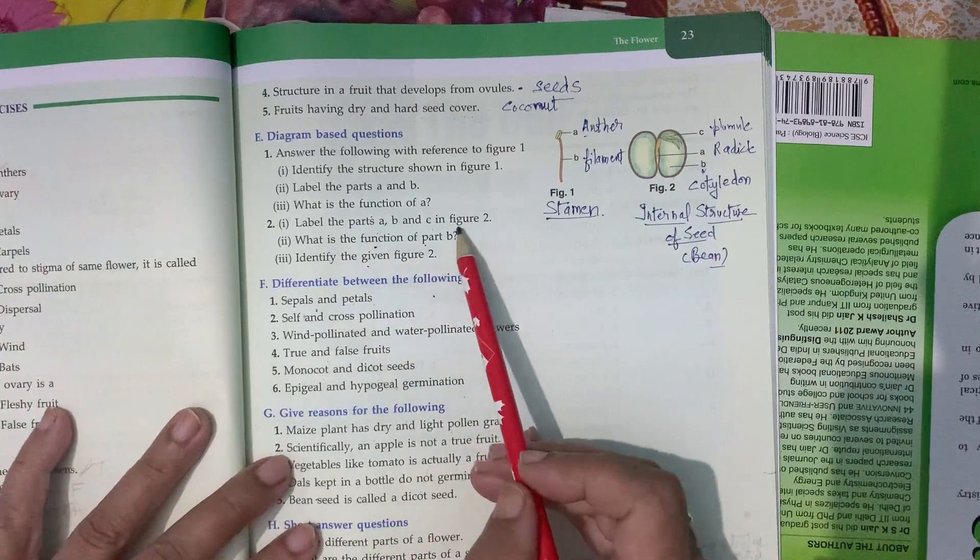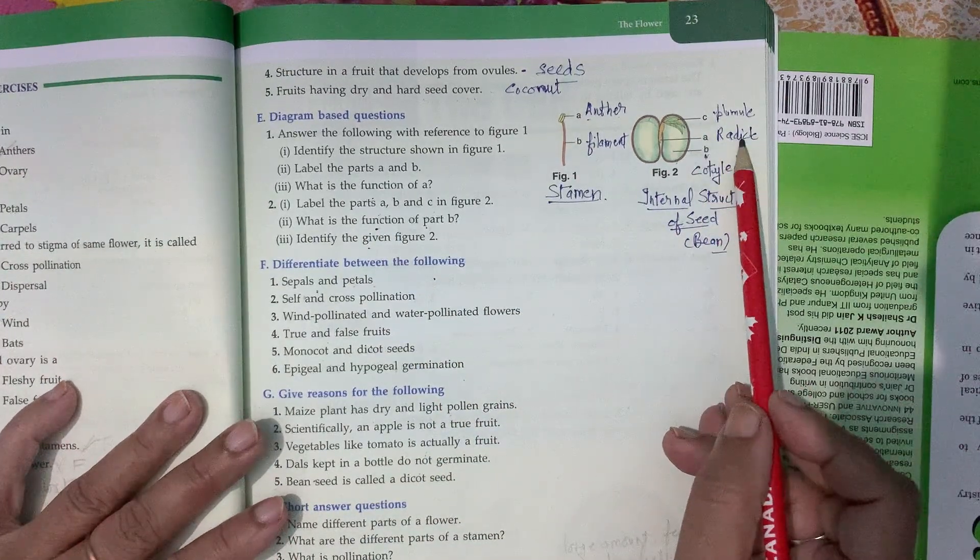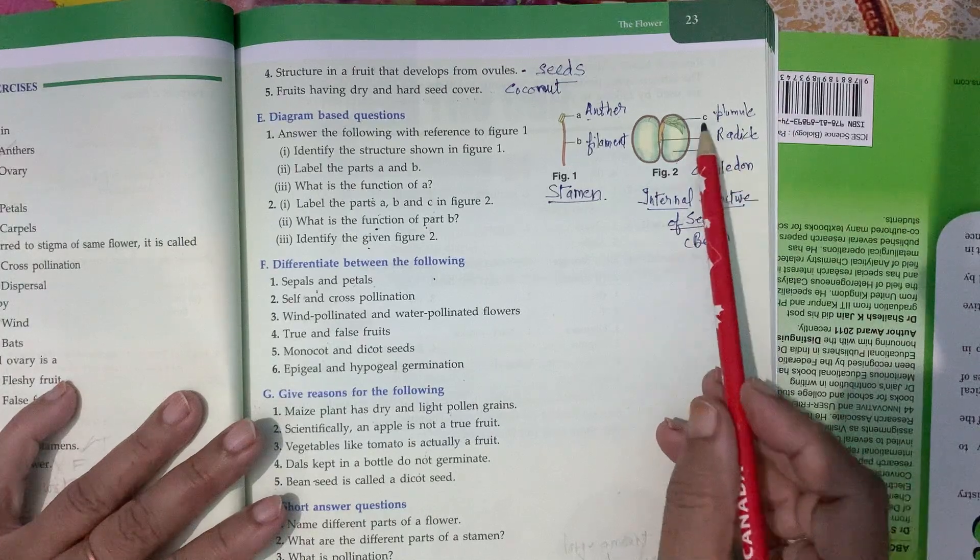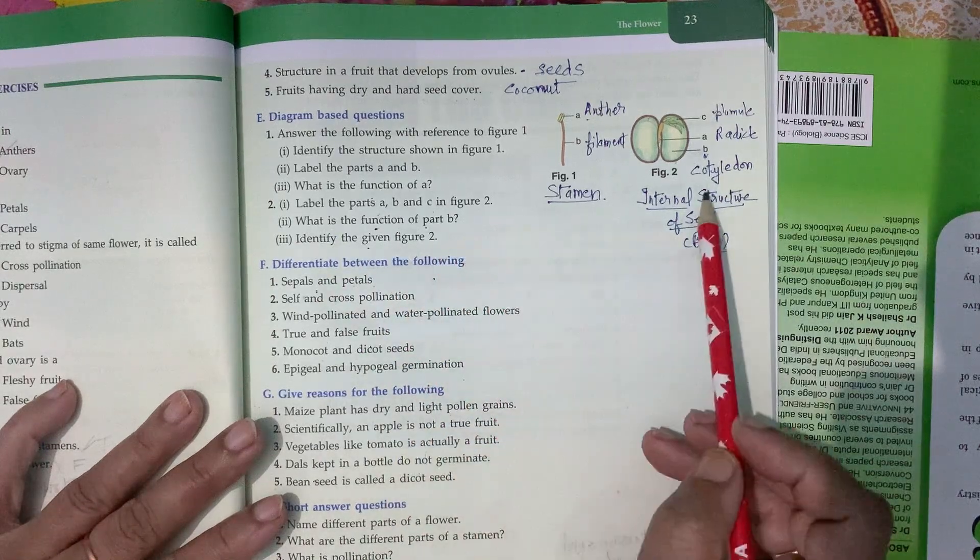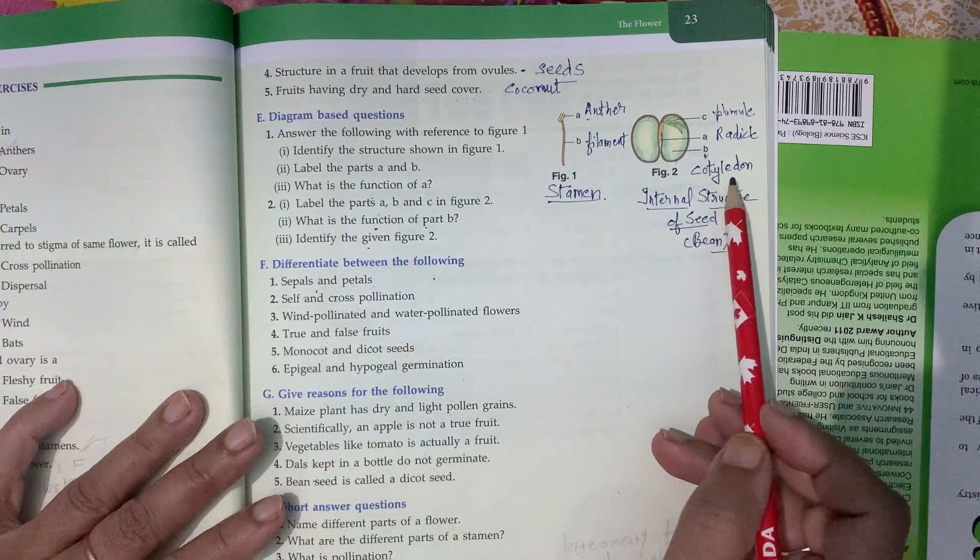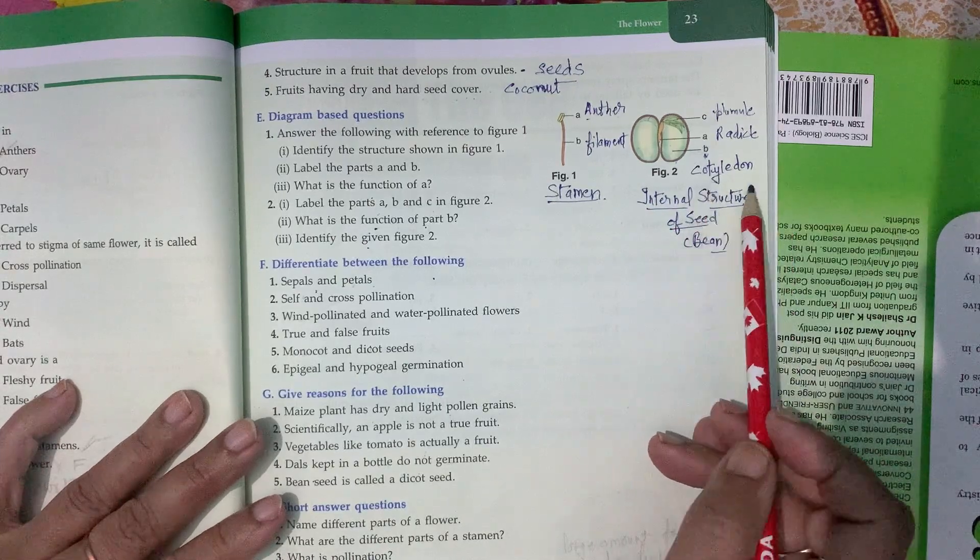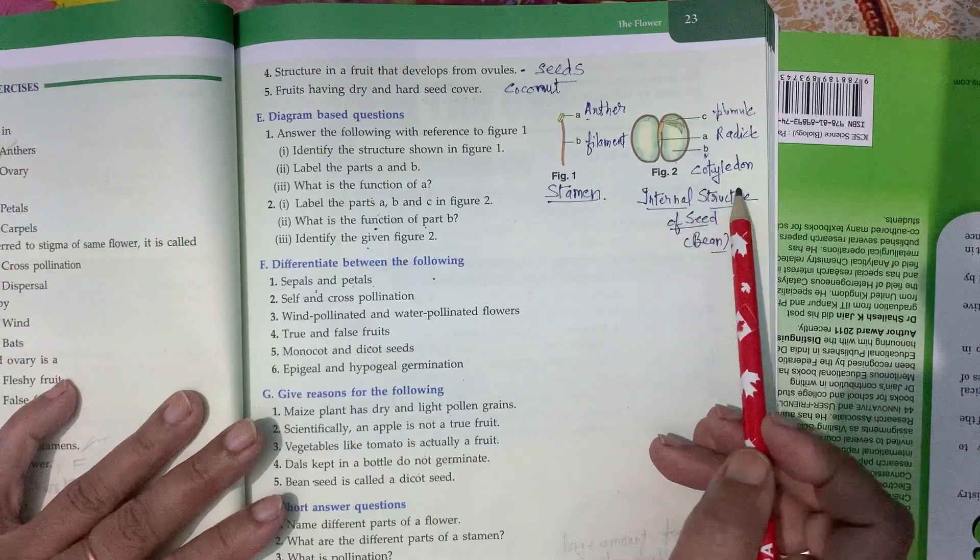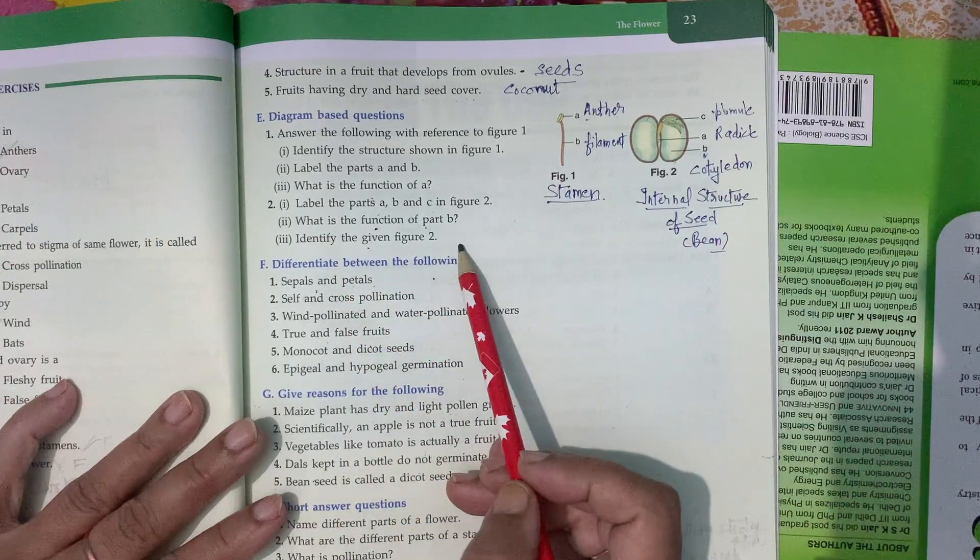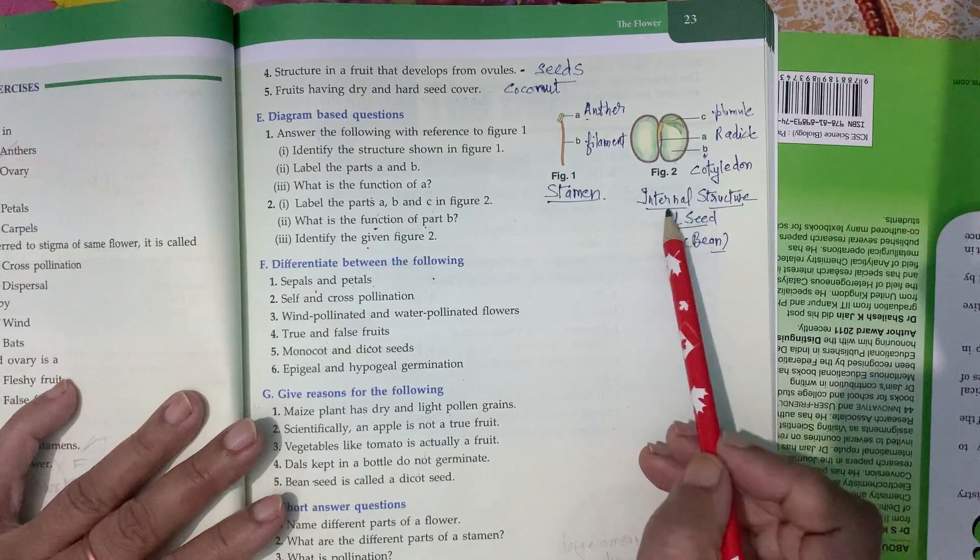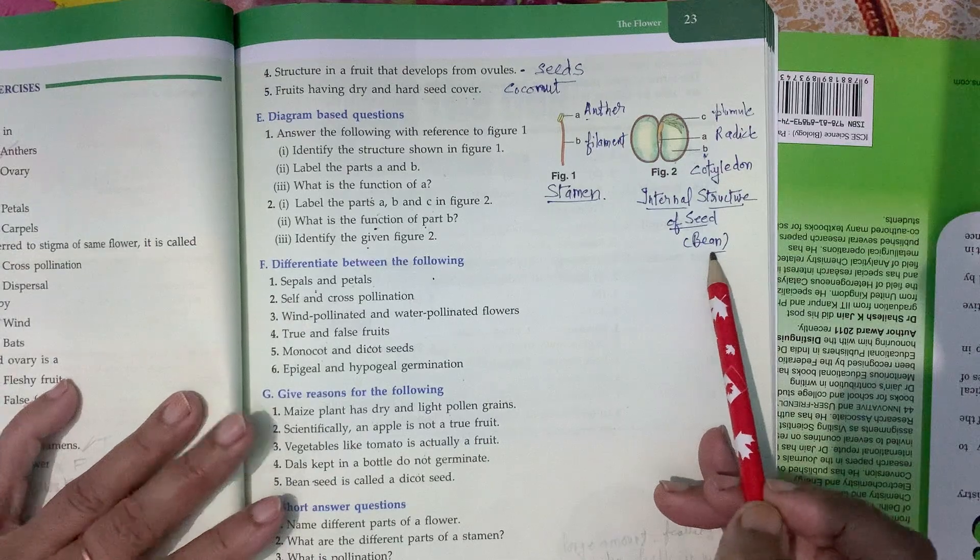Label the parts A, B, C in figure 2. A is radicle, B is cotyledon, C is plumule. What is the function of part B cotyledon? It stores food for the baby plant. Identify the given figure 2. It is internal structure of dicot seed.